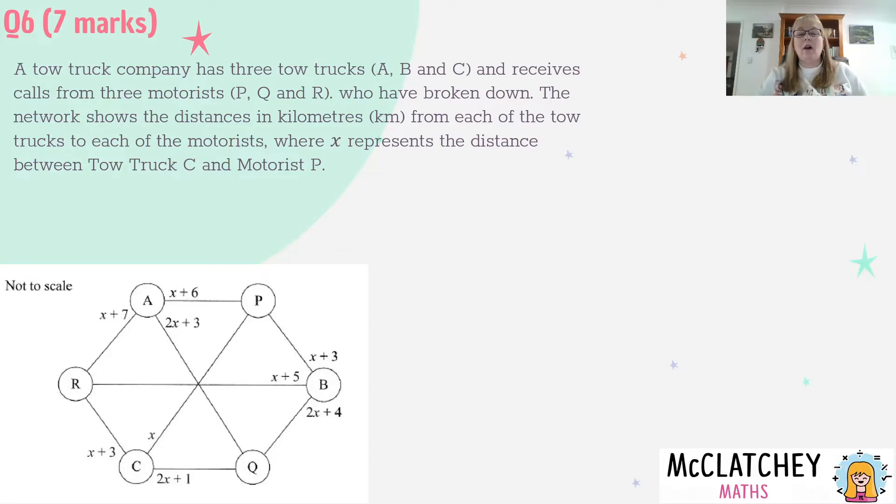Now if we look at the diagram that we've been given, it's not to scale so we can't use our rulers to work out which is the longest way. We'll notice that there's nothing there in concrete numbers, everything is an algebraic expression that will probably cause a few students to panic. We've been used to seeing these networks represented with numbers not with algebraic expressions.